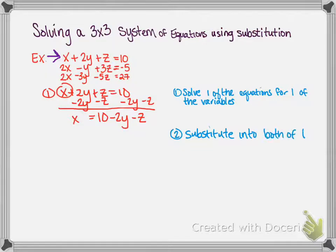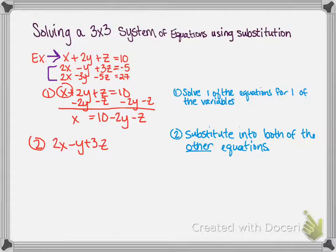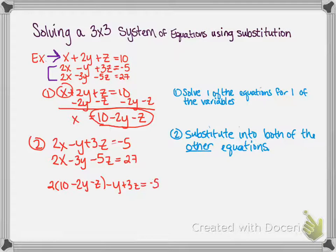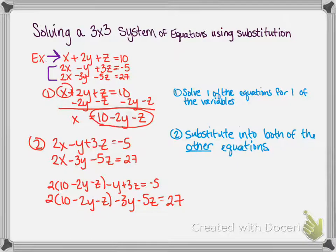Next step: we are going to substitute what we just found — x equals 10 minus 2y minus z — into both of the other equations. The first equation, 2x minus y plus 3z equals negative 5, becomes 2 times (10 minus 2y minus z) minus y plus 3z equals negative 5. The second equation, 2x minus 3y minus 5z equals 27, becomes 2 times (10 minus 2y minus z) minus 3y minus 5z equals 27.